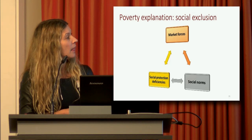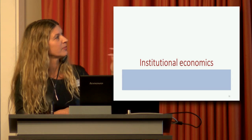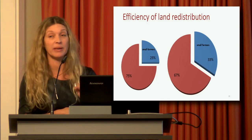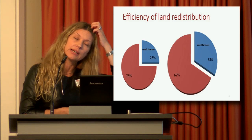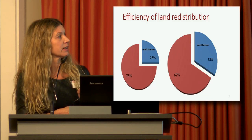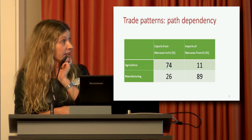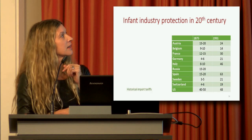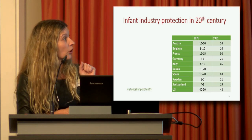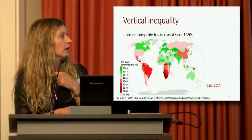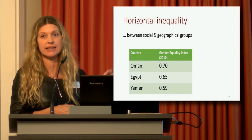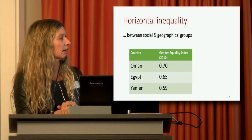The explanation of poverty is largely reinforcing market forces of accumulation — that's why we needed the fourth function of money — along with social norms and social protection deficiencies. In institutional economics, the institutions of growth include the idea that redistribution is not necessarily reducing efficiency but may increase it, based on empirical studies on land reform in India, South Africa, and Brazil. Trade patterns and path dependency — I did some empirical work on the trade agreement between Mercosur and the EU. Infant industry protection, again drawing on Ha-Joon Chang's work on historical trade tariffs. Vertical inequality is captured by the Gini index, and horizontal inequality refers to inequality between social groups and geographical groups — not uniform within a region, as variation in the gender equality index across Oman, Egypt, and Yemen in the MENA region shows.